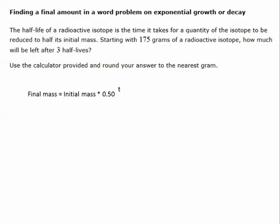Now, the last problem type we're going to see on this topic deals with half-lives. It says the half-life of a radioactive isotope is the time it takes for a quantity of the isotope to be reduced to half its initial mass. So we're going to start with the mass of 175 grams of a radioactive isotope. And they want to know how much will be left after three half-lives. So we come down here, and here's our formula. Our final mass is equal to our initial mass times 0.50 raised to the power of t. So we know that our initial mass is 175, and we have three half-lives. So here's our formula.